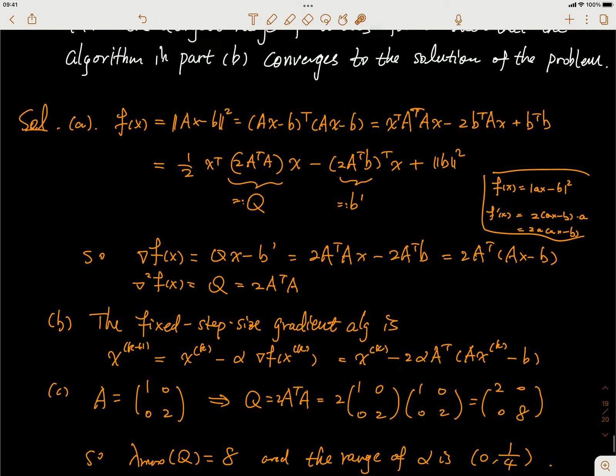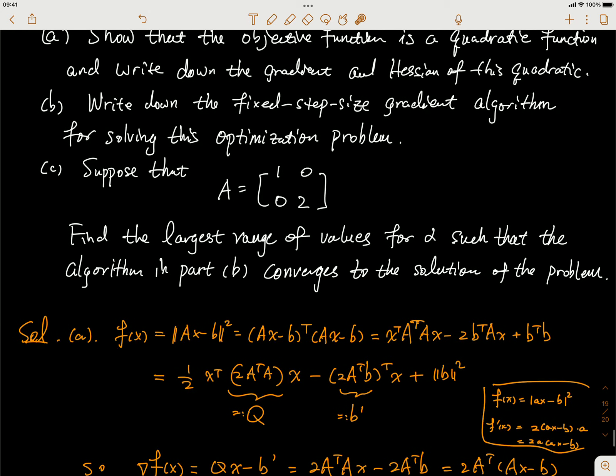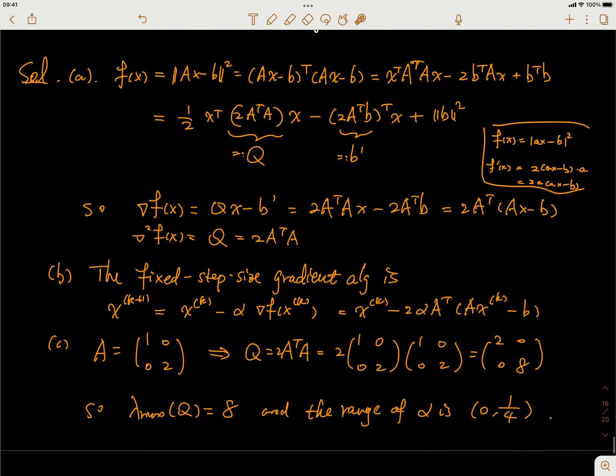The second question is, write down the fixed step-size gradient algorithm for solving this optimization problem. That's pretty straightforward—just write down the gradient method with a constant step size α. The gradient is something we know, the form is just this. So you can plug that in with x equals x_k. So that's the fixed step gradient method.